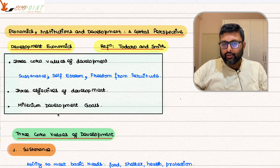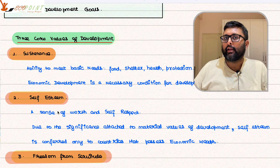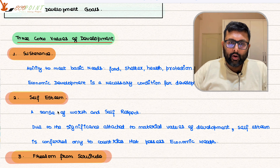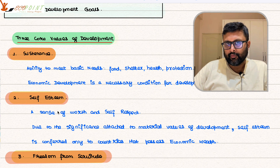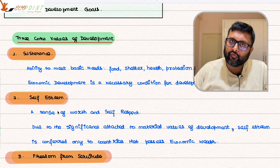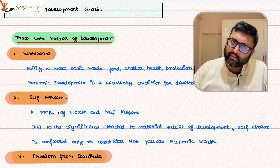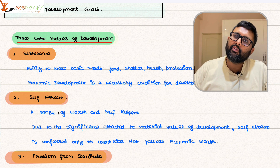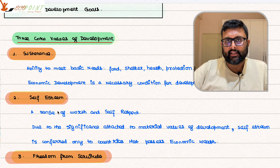The first core value of development is sustenance. When you talk about development, the first thing that should come to mind is sustenance — whether the growth in the economy is able to provide basic things: food, shelter, health, and protection. If these things are given, then we will say that yes, there is development. Development is able to provide sustenance.